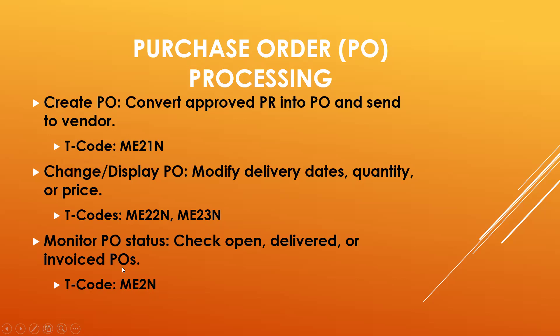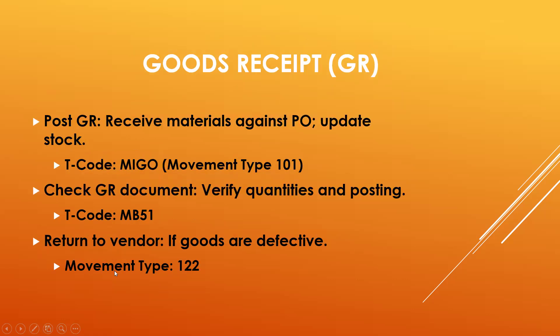The transaction codes are ME21N and ME22N. Next, they do Goods Receipt — receiving material inbound and updating the stock in the system. The transaction code is MIGO. They verify the quantities and do the posting. The transaction code for the material document is MB51. They also process returns to the supplier when the quality is not up to expectation — Movement Type 122.